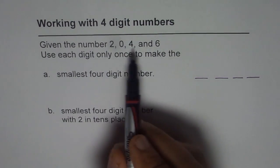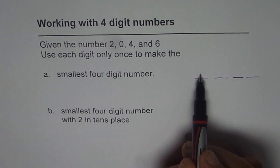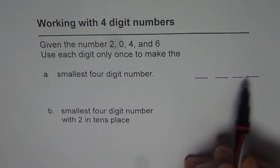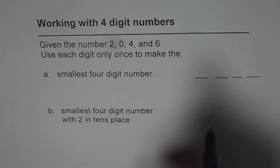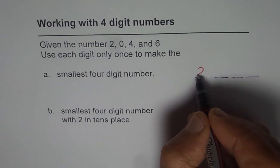Smallest number amongst these is zero. So if I write zero here, do I get a four digit number? No, we get a three digit number. So we cannot write zero here. Then the next smallest is two. So let us write down two here.